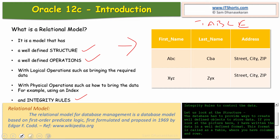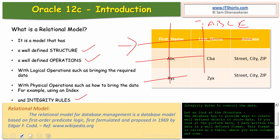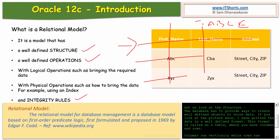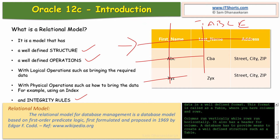A table has columns and rows. Columns run vertically while rows run horizontally, and it also has a header for the column. A database has to provide means to create a well-defined structure such as a table.